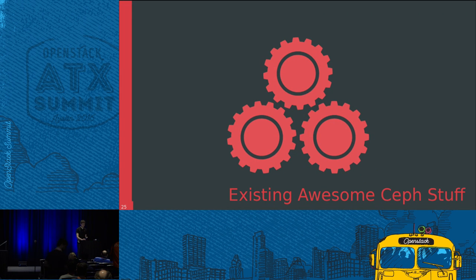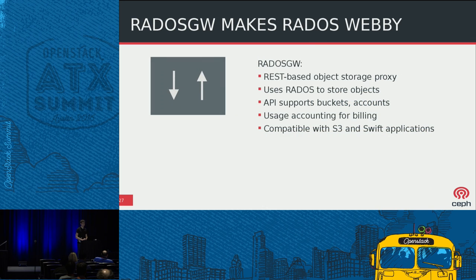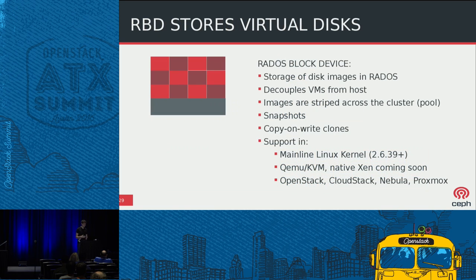Within the Ceph project we have a couple of things that already exist. We have the RADOS Gateway, which serves up S3 and Swift compatible APIs to the outside world and stores it within a RADOS cluster. Similarly, we have the RADOS block device. It runs as a user space library inside QEMU/KVM or as part of the Linux kernel, and it translates block device commands into operations on the RADOS cluster. It's the number one OpenStack Cinder storage solution.